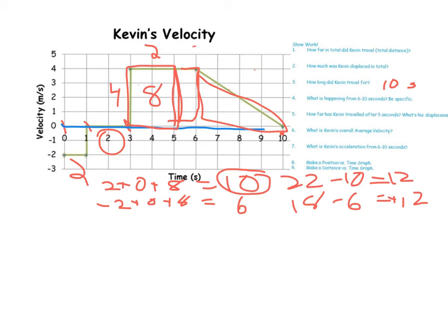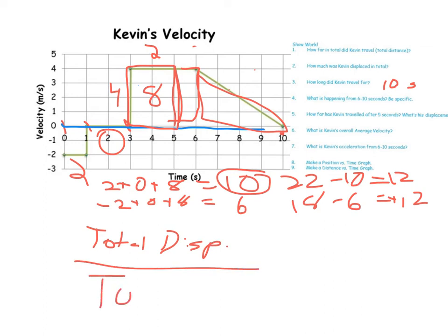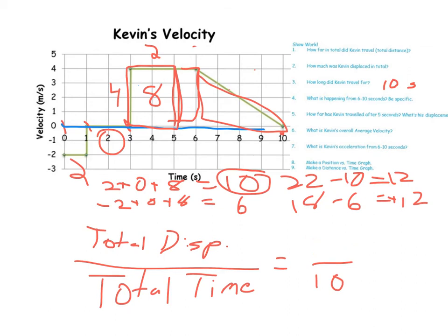For Kevin's overall average velocity, we need total displacement over total time. The displacement was eighteen meters over ten seconds, which gives us 1.8 meters per second forward. That makes it a velocity.